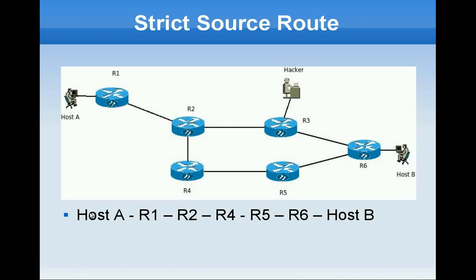So in this path, our path is R1, R2, R4, R5, R6 and all the way to host B.